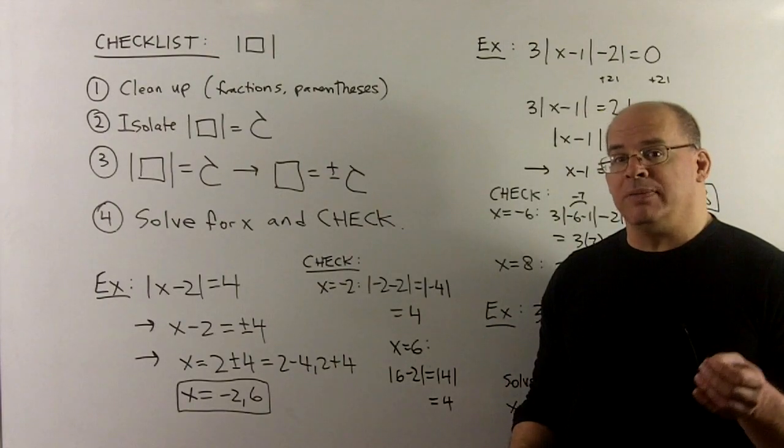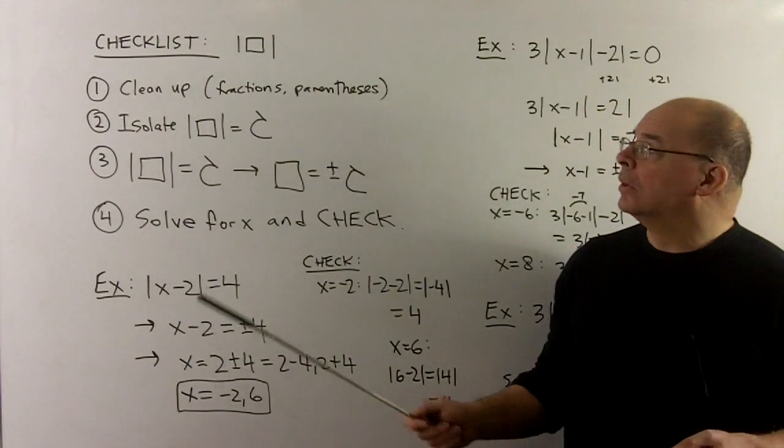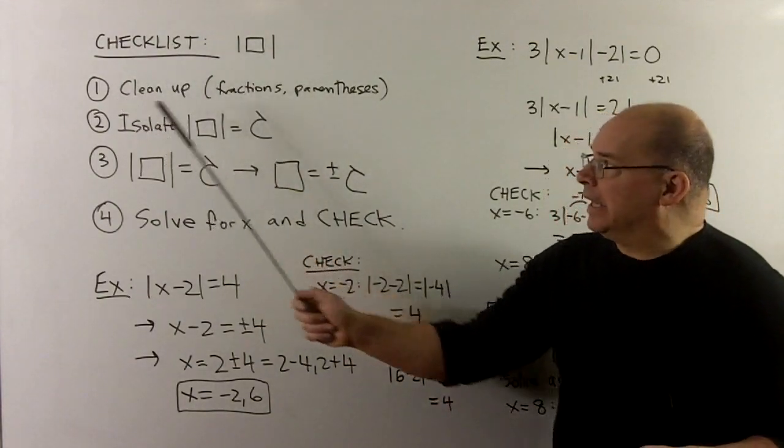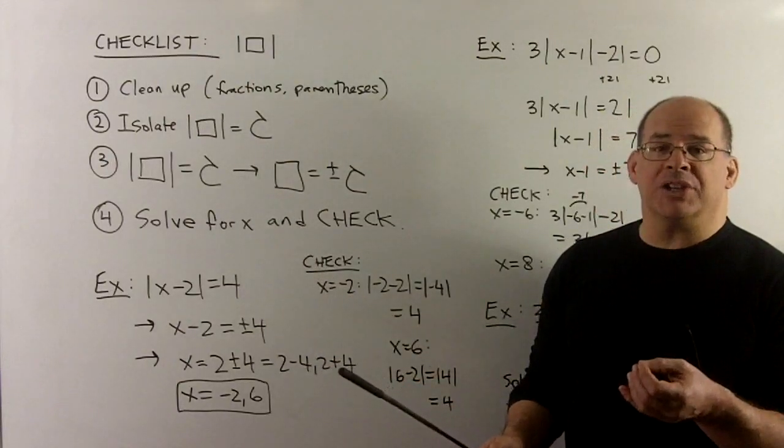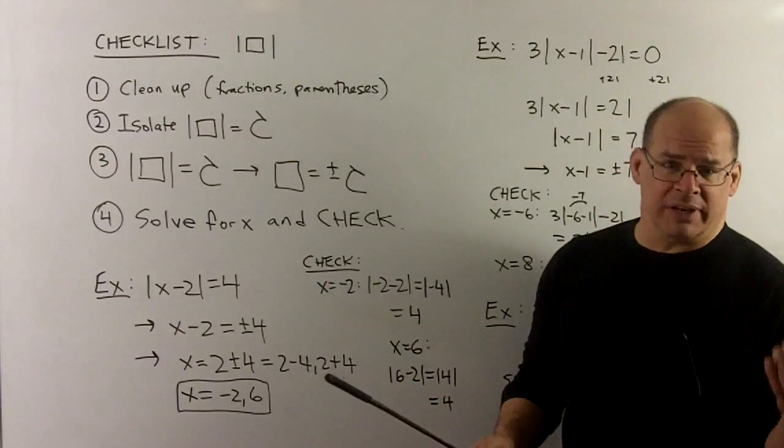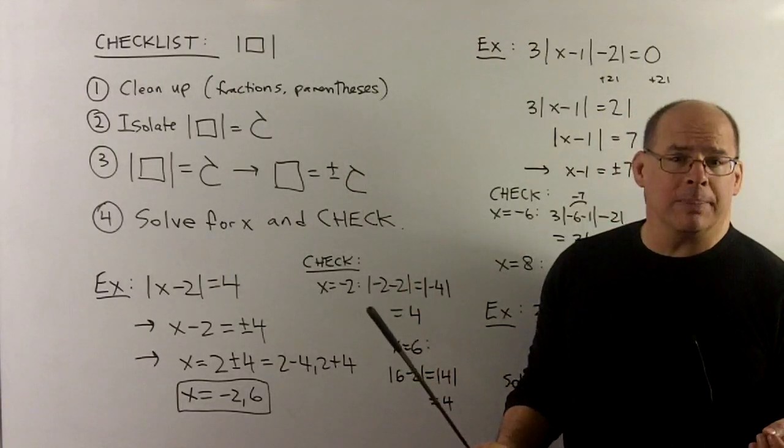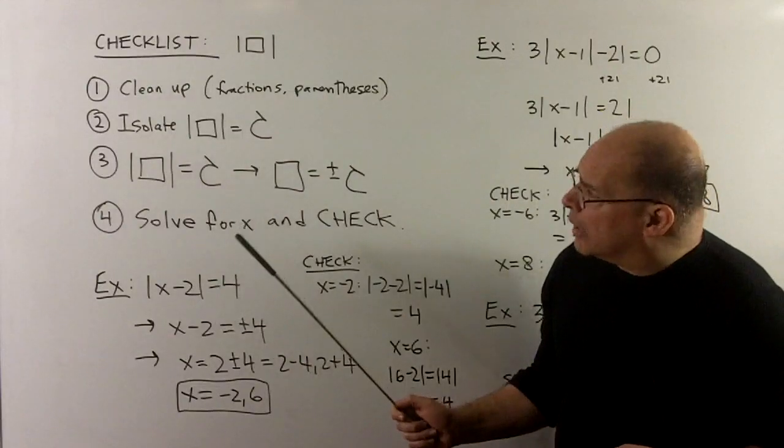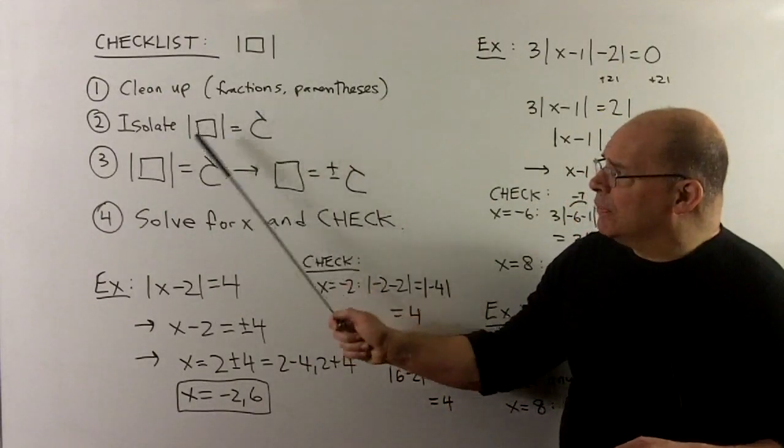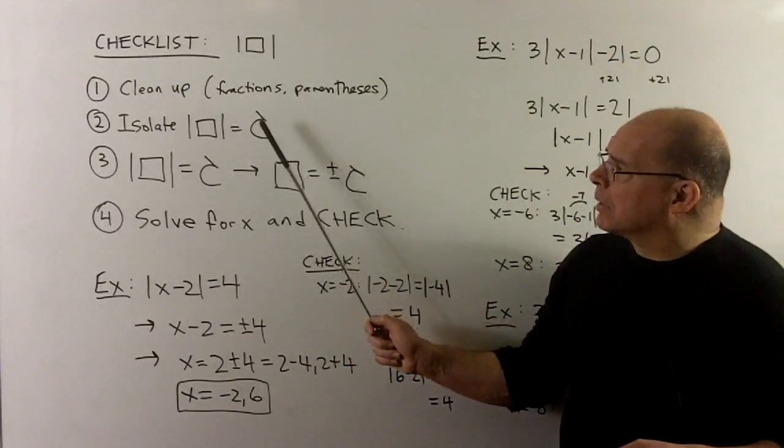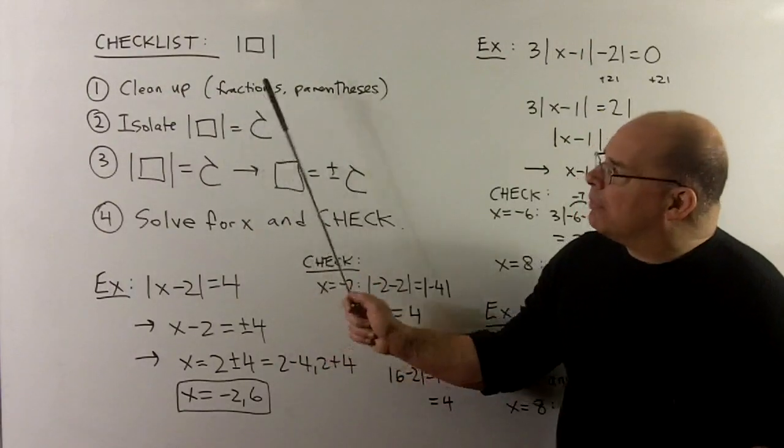For a checklist for solving absolute value equalities, first, we'll start with cleanup. So if we have fractions, we can clear out the denominators because we have an equals. If we have parentheses, we want to distribute to get rid of them, and so on. The goal, we want to isolate the absolute value of box.